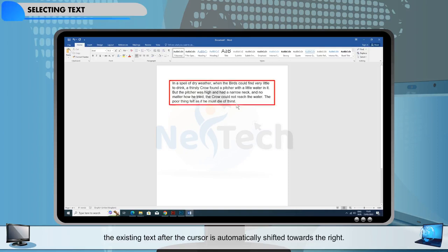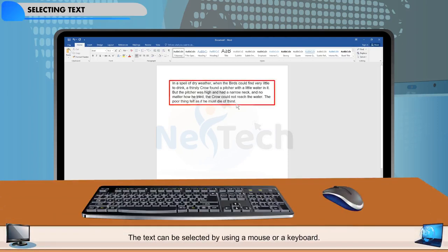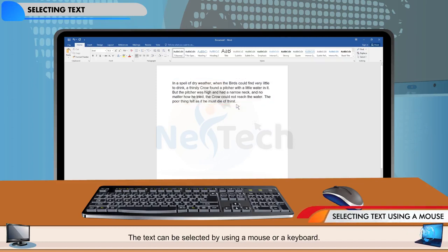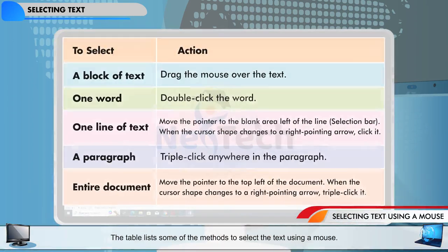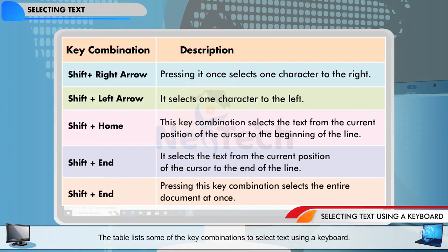Selecting text. If you wish to make any changes in the existing text, you first need to select it. The text can be selected by using a mouse or a keyboard. This table lists some of the methods to select the text using a mouse. This table also lists some of the key combinations to select text using a keyboard.